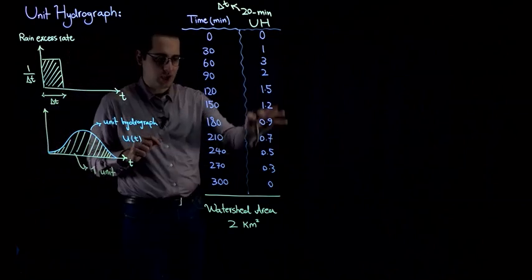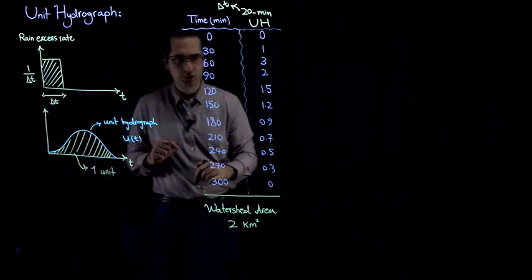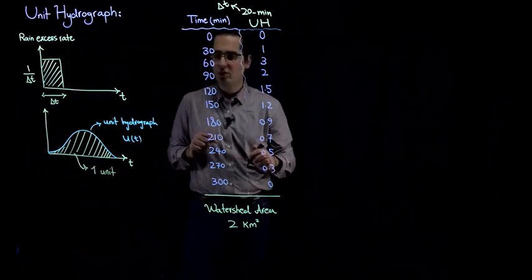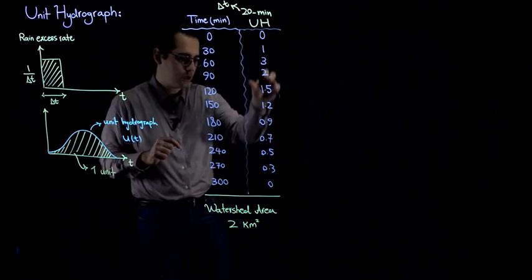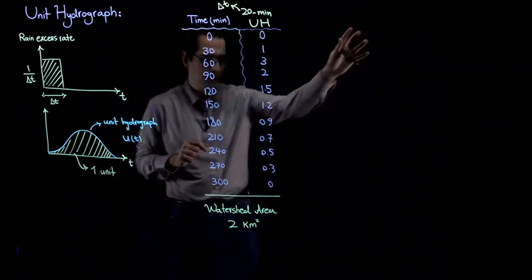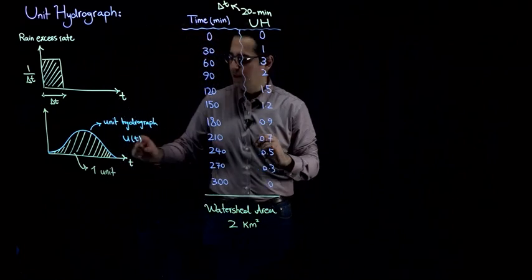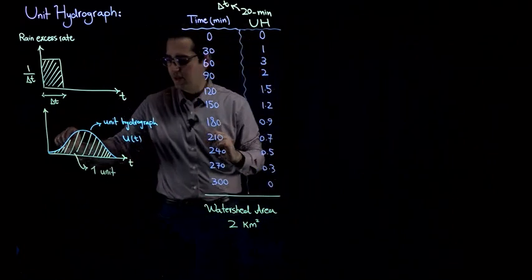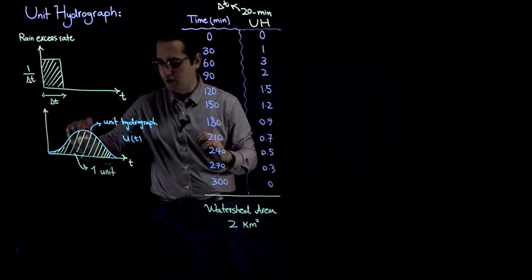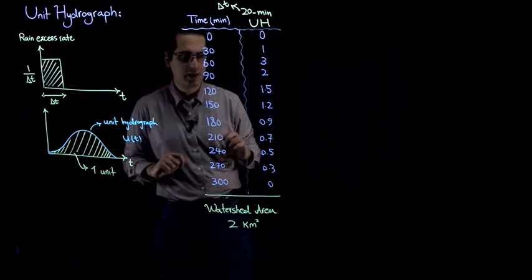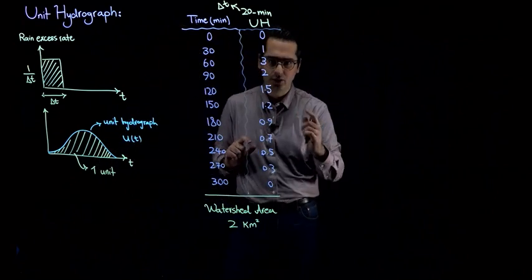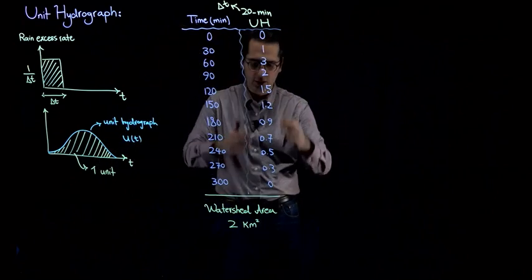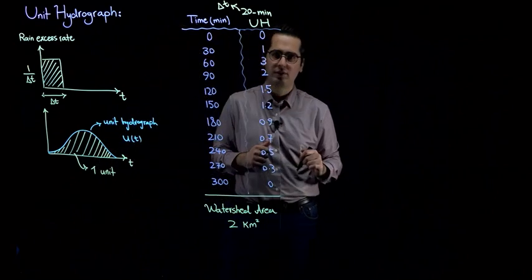We are working with SI units, so we are going to draw this hydrograph and then calculate the area under the hydrograph. If it's equal to 1 centimeter, it means that this is a unit hydrograph.